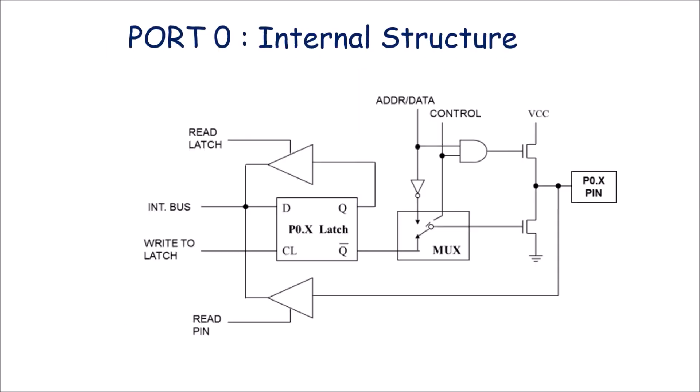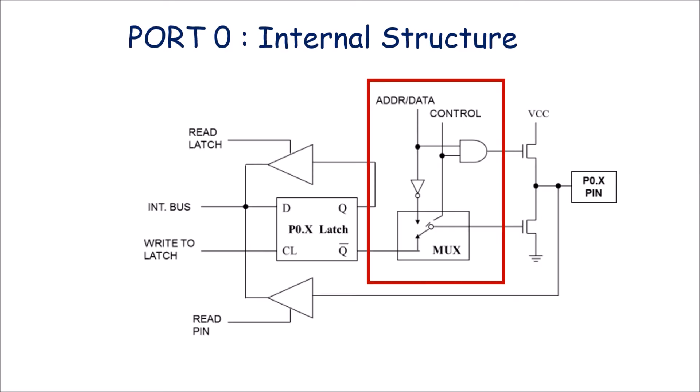Now let us understand the internal structure of port 0. Port 0 can be used as an input-output port or as a multiplexed lower-order address and data bus — AD0 to AD7. Since it has two functions, a special arrangement is used in the internal structure of port 0. A control signal decides whether the port will be used as an I/O port or as an address-data bus.